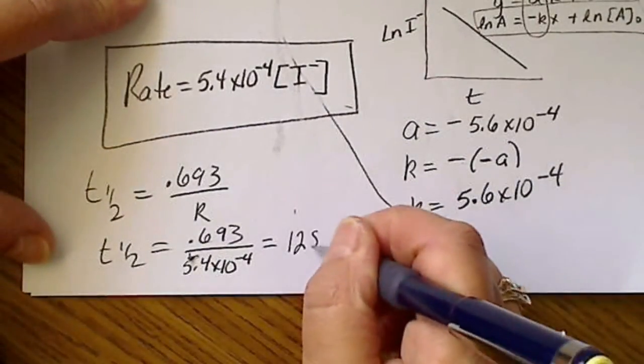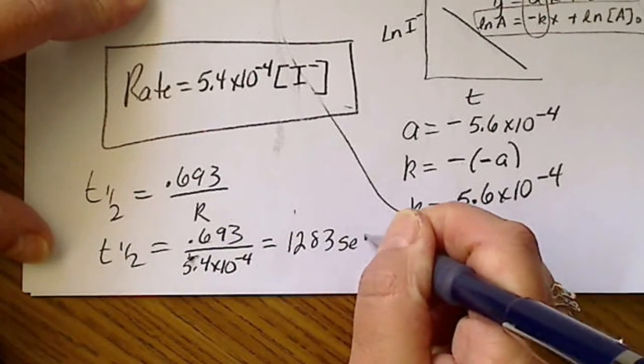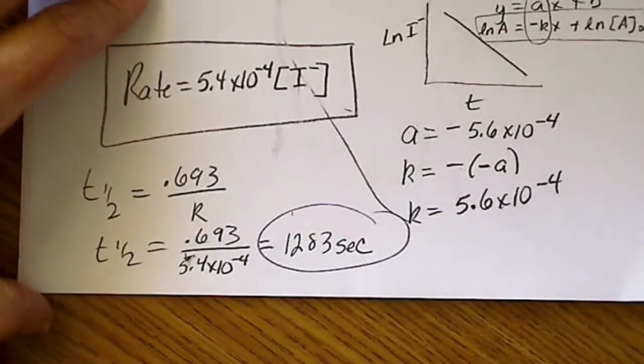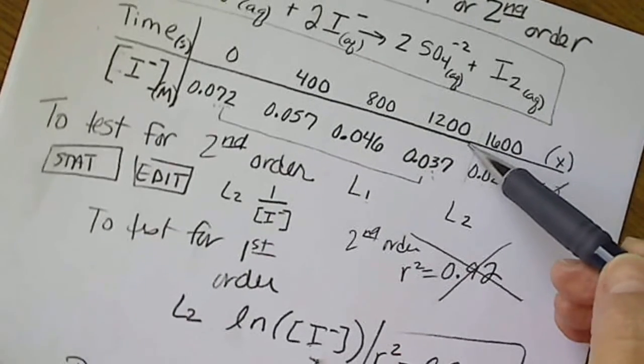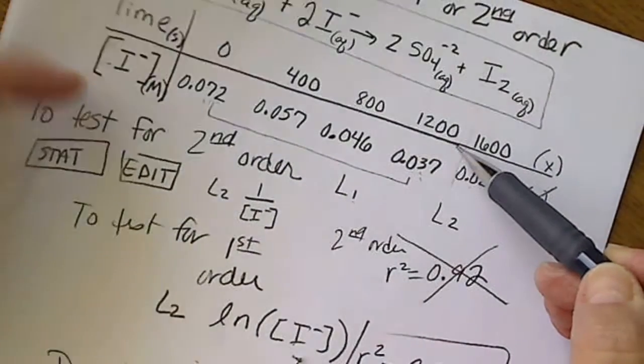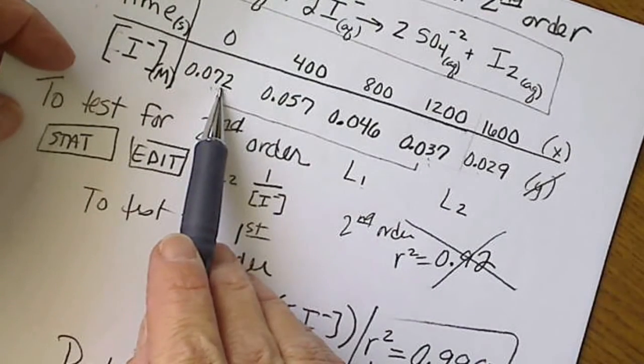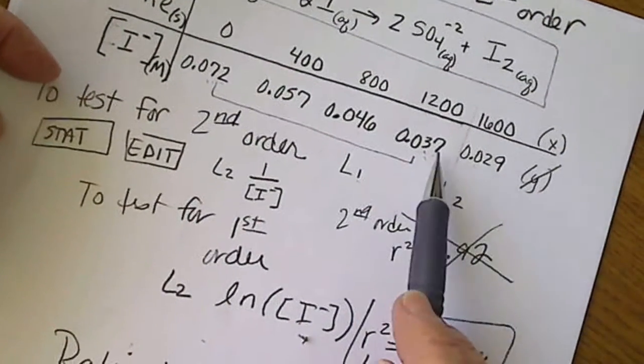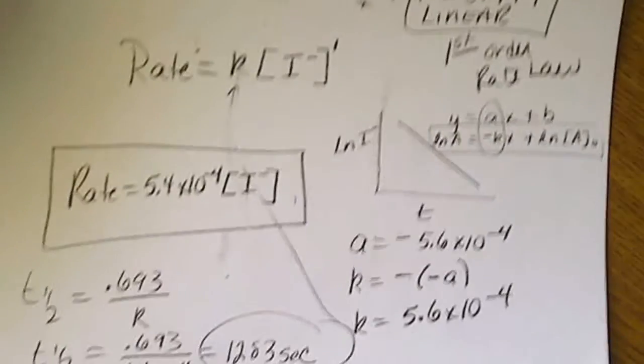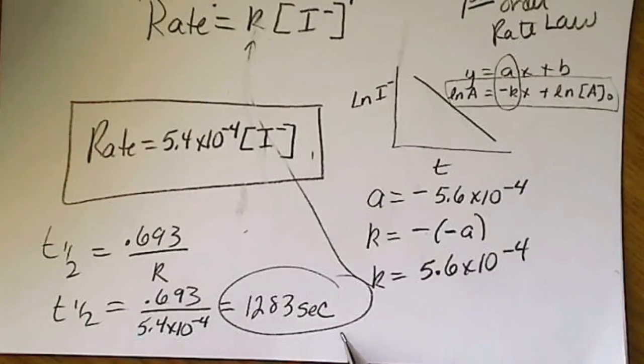1,283 seconds. And if we compare that to the table, that's pretty close. So the half-life is when exactly half of what we started with is still present. So that's kind of a confirmation here. We just look at the table.